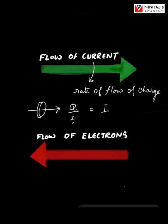And in a wire, these charges are the electrons. So why then is the direction of flow of current taken opposite to the direction of flow of electrons?